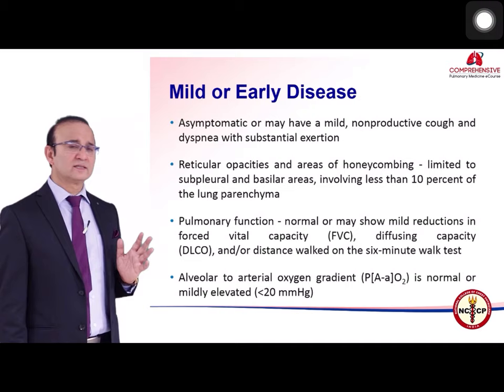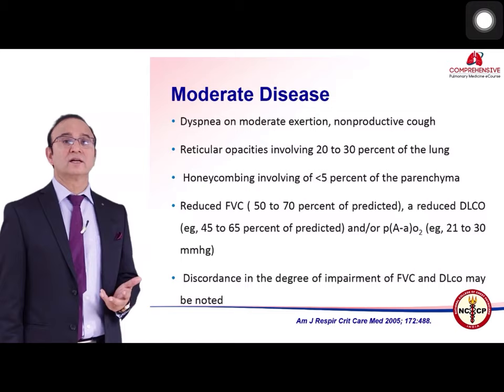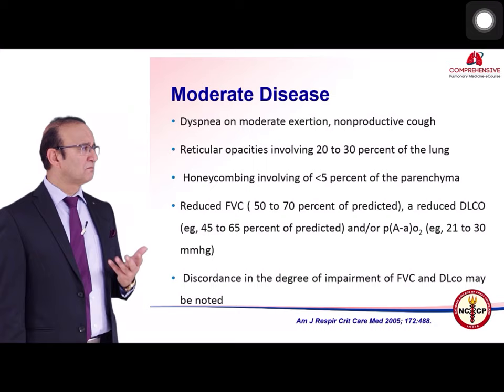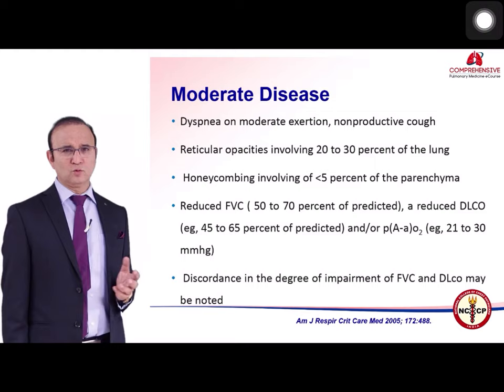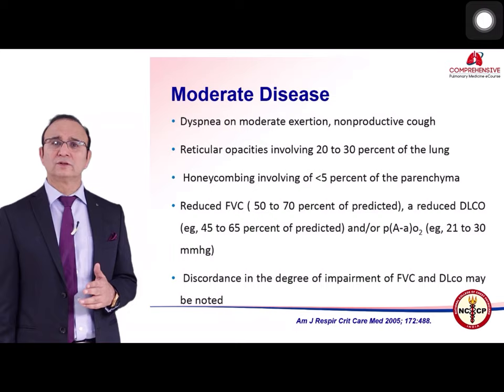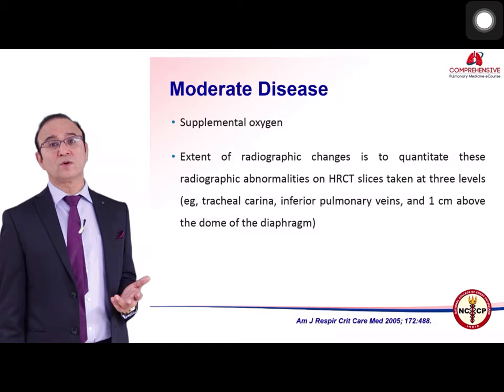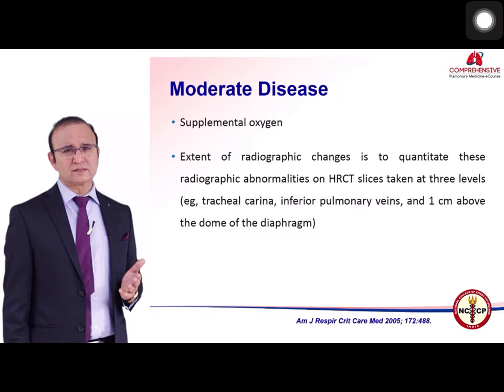The alveolar-arterial oxygen difference is less than 20 mmHg in mild disease. In moderate disease, the patient develops dyspnea on moderate exertion with nonproductive cough and mild-to-moderate pulmonary function abnormality: FVC 50–70 percent, DLCO 45–70 percent of predicted, and A-O2 difference of 21–30 mmHg. These patients may require supplemental oxygen with exertion. Radiographic changes involve more than 10 percent, up to 20–30 percent of the parenchyma.